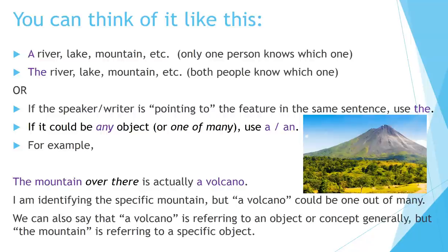If it could be any object, or one of many, use a or an. For example, the mountain over there is actually a volcano. I'm identifying the specific mountain, but a volcano could be one out of many. We can also say that a volcano is referring to an object or concept generally, but the mountain is referring to a specific object.